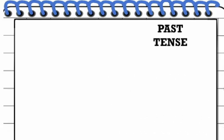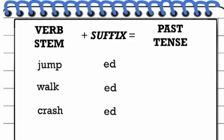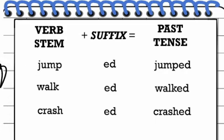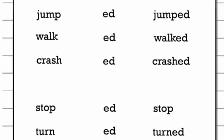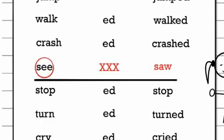This toddler is learning how to express past tense. The most frequent pattern is to add the past tense suffix to the verb stem. But in this case, the toddler applied the suffix to a lexical exception, the verb 'see,' whose past tense form is the irregular 'saw.'